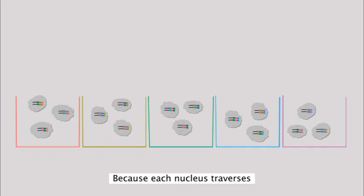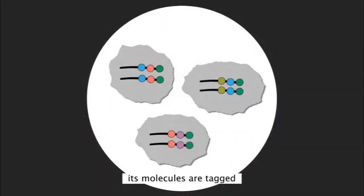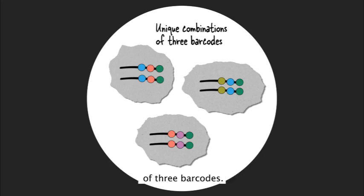Because each nucleus traverses a unique combination of three wells, its molecules are tagged with a unique combination of three barcodes.